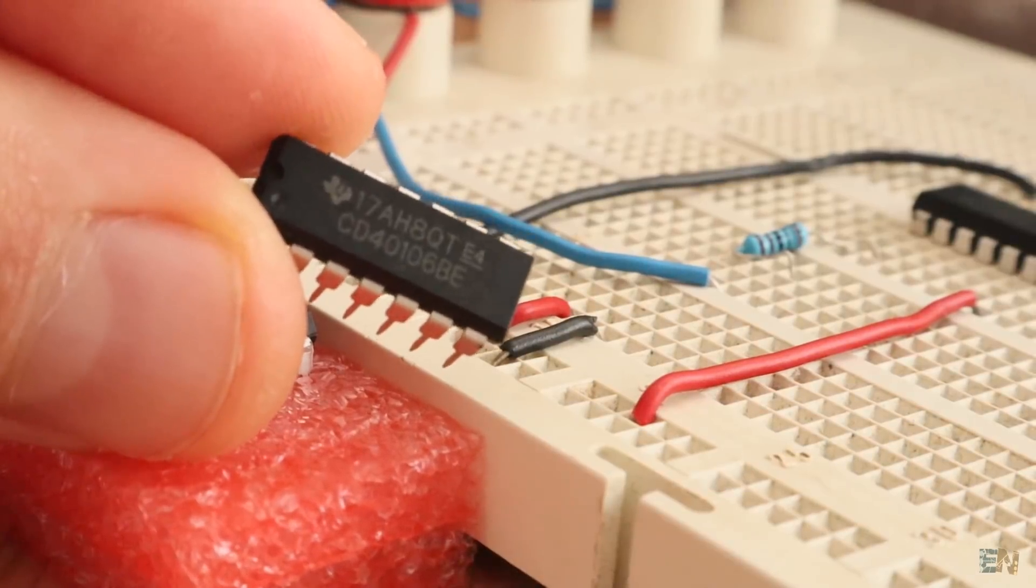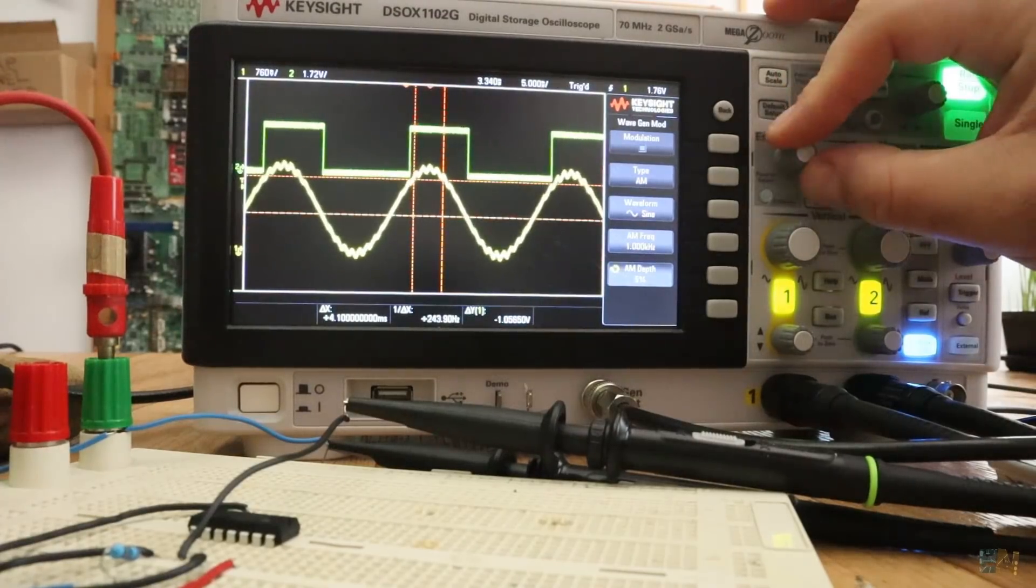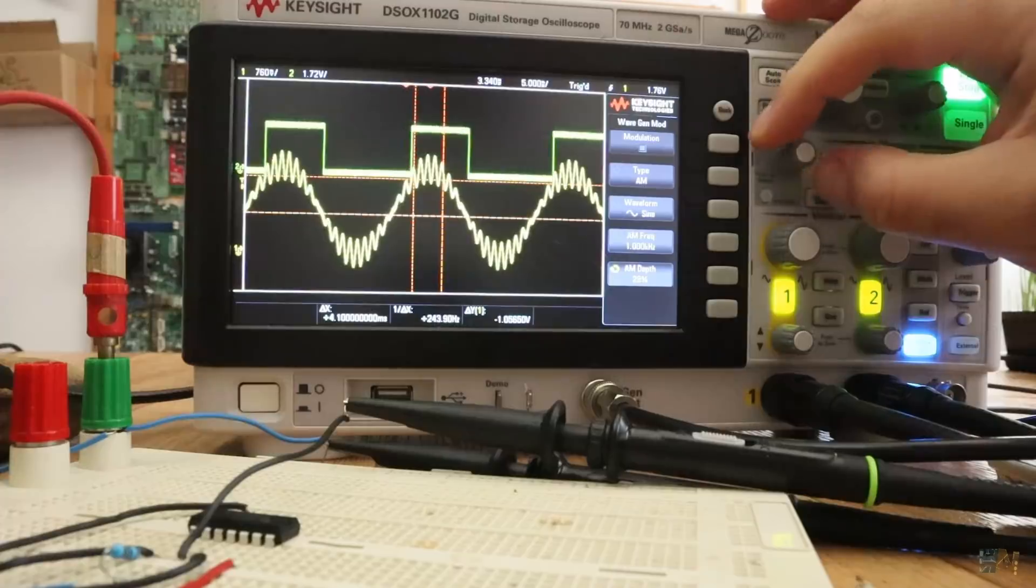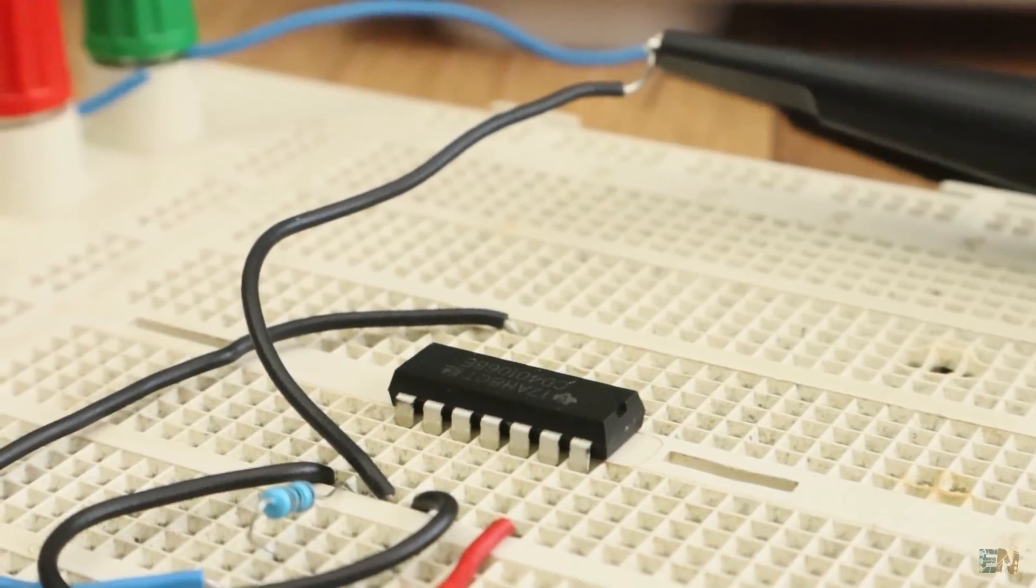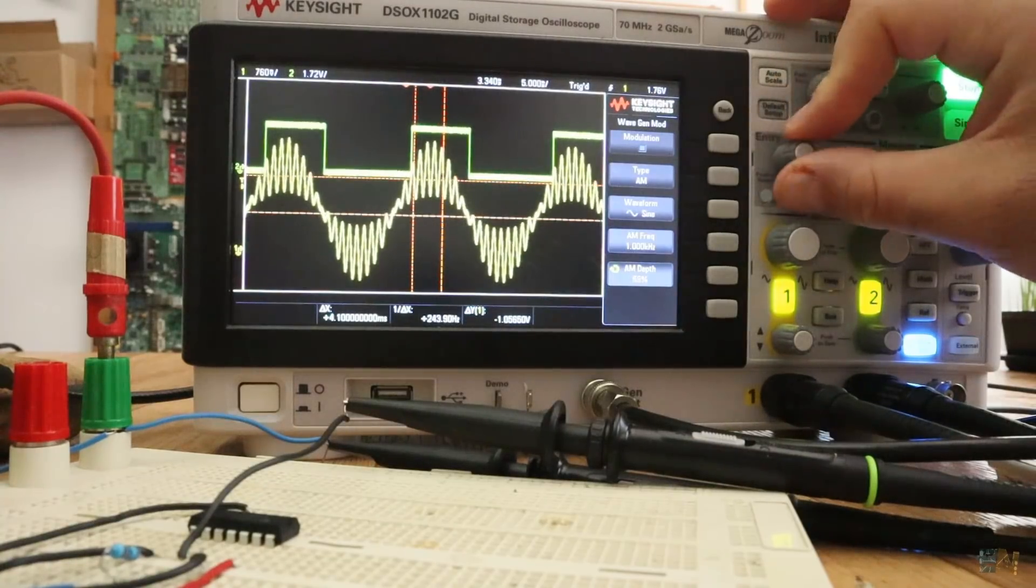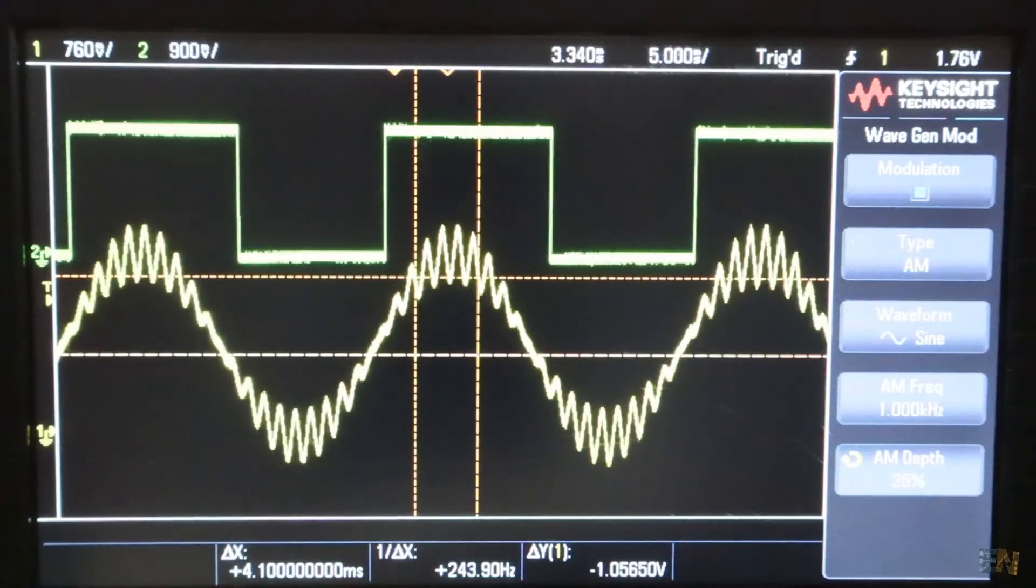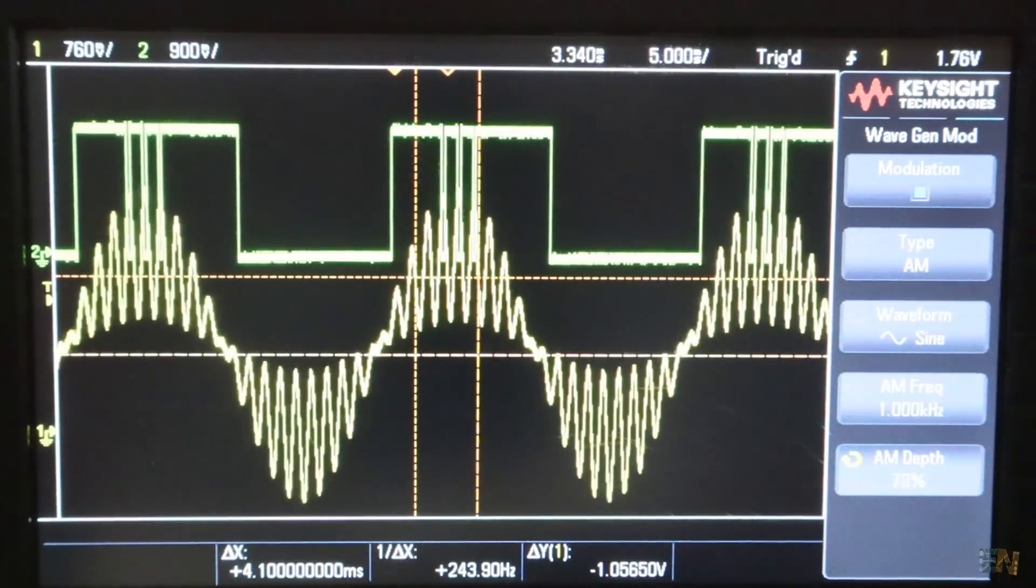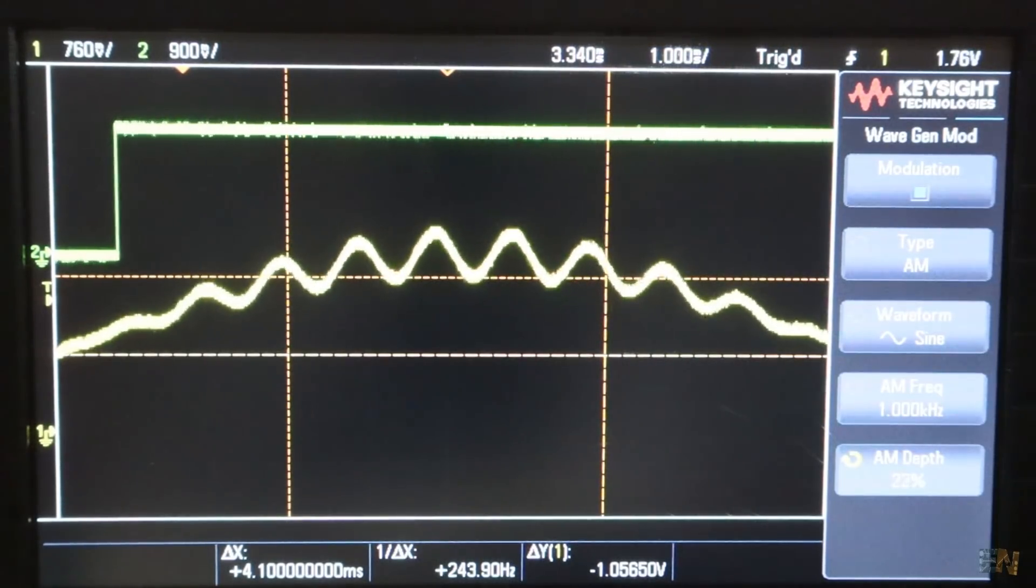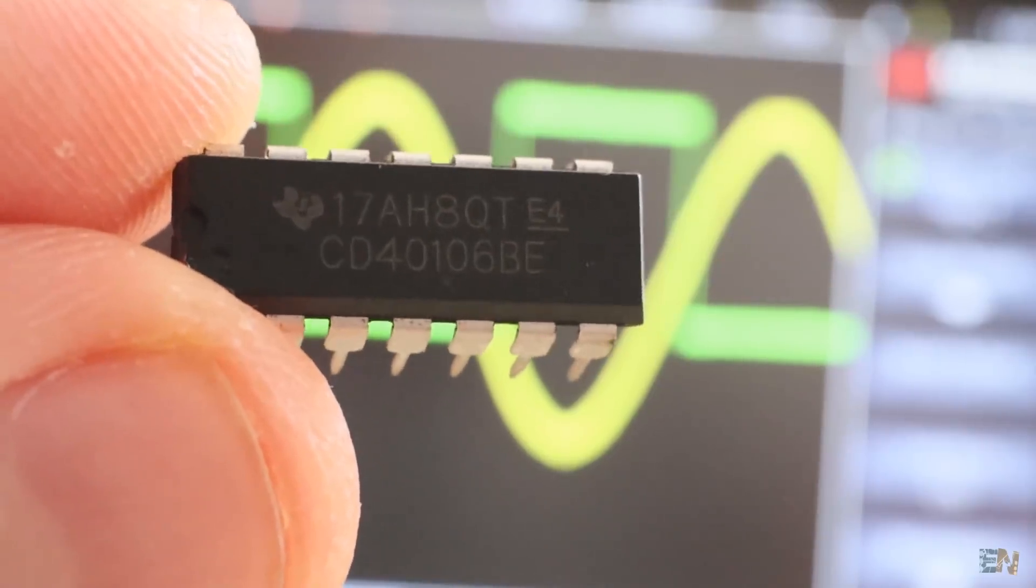But now I do the same with the CD40106B Schmidt trigger. And now I have good results. I have a Schmidt inverter, so I had to invert the signal 2 times in order to get positive pulse. As you can see, now with even bigger ripples, I still have a good wave. But of course, if I increase the noise even more, I will eventually get errors as well, since now I pass both threshold values of the trigger. See the datasheet of your Schmidt trigger in order to know more about it.